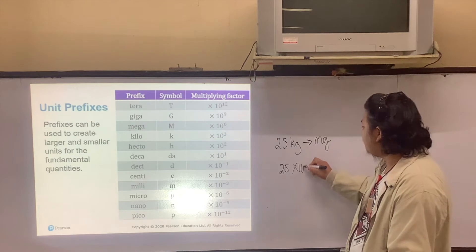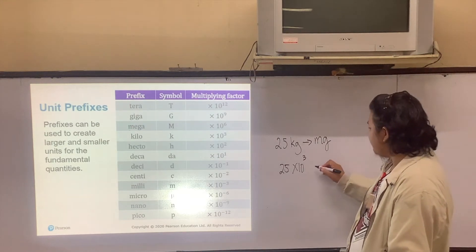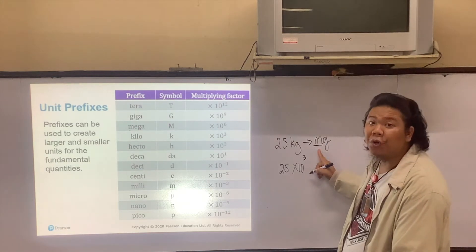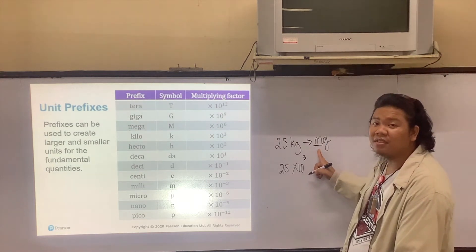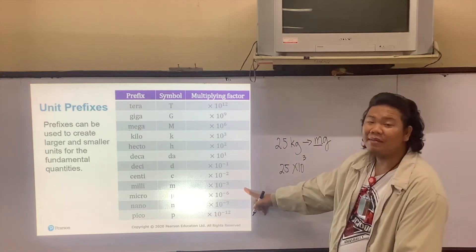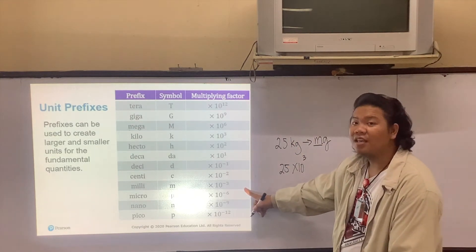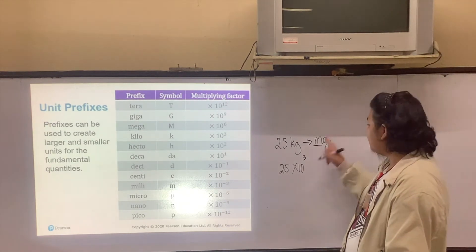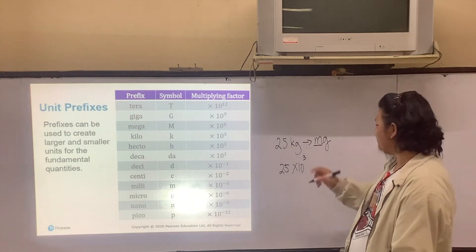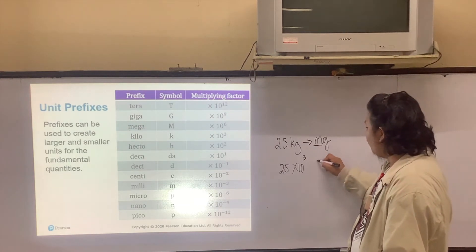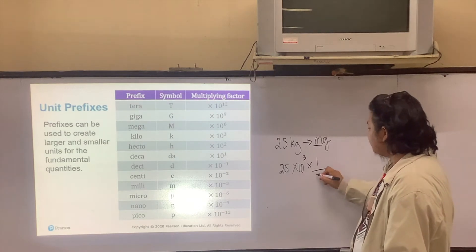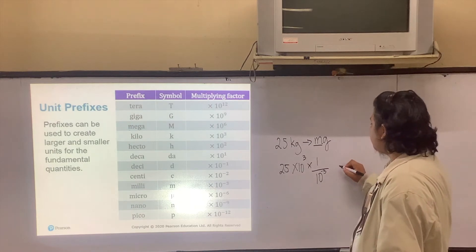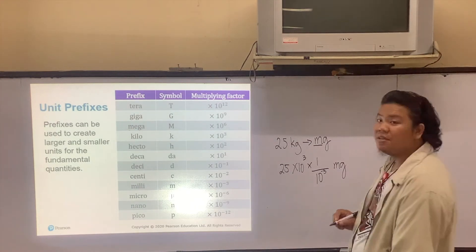It's times 10 to the positive 3. Then look at your conversion goal, which is milligrams. If you check the table, milli means times 10 to the negative 3. Now, all you have to do is get the reciprocal of the prefix milli. So this will become 1 times 1 over 10 to the negative 3, and you will write milligrams.